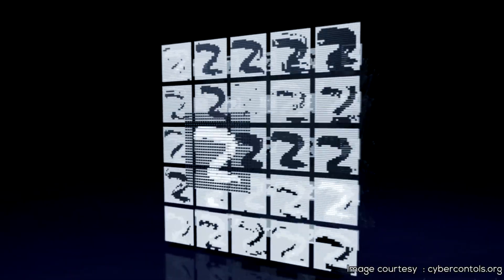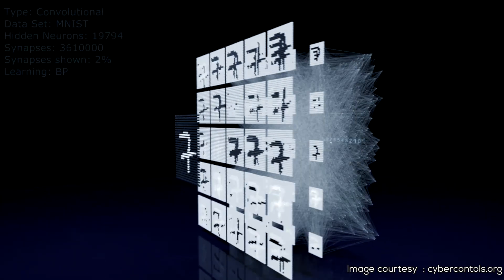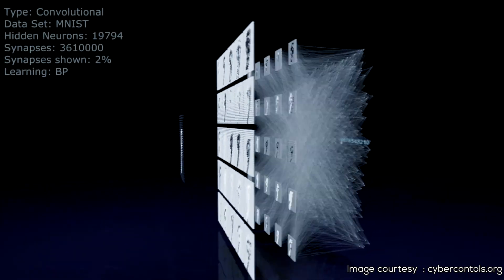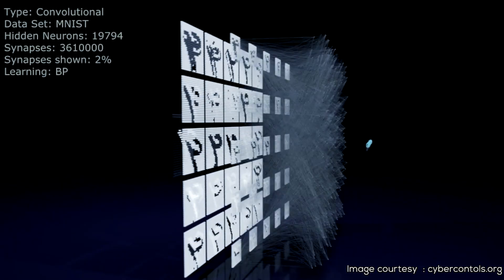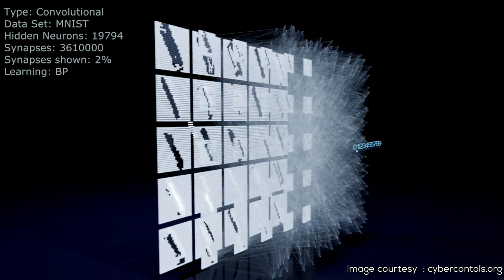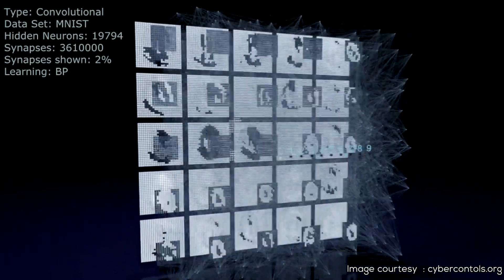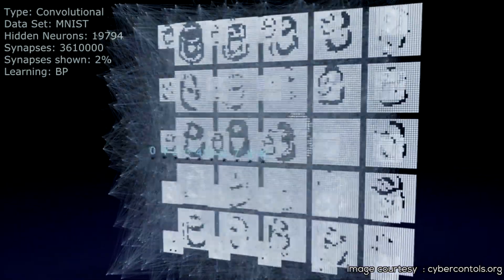Once we had the universal logic gate, we managed to demonstrate that addition and multiplication are possible. The biggest finding was convolution — the moment you can do convolution using magnetic quantum cellular automata, the entire domain of deep neural networks can be explored by this alternative technology.